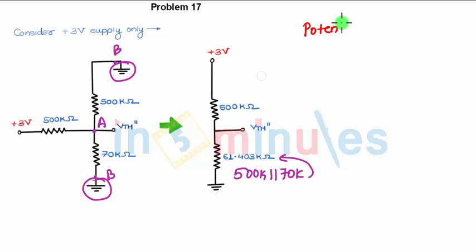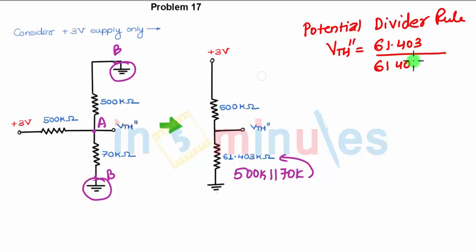Voltage Vth double dash will be 61.403 divided by 61.403 plus 500, multiplied by 3. This will give you Vth double dash, which will come around 0.3281 volts. Now our last task is to find the voltage because of minus 5 volts.